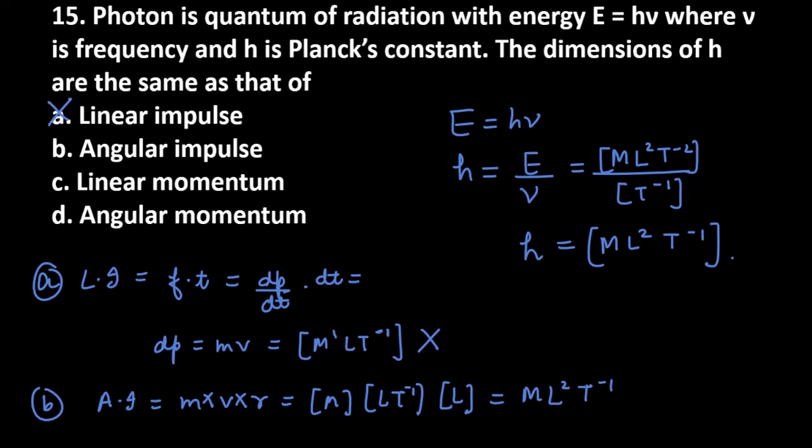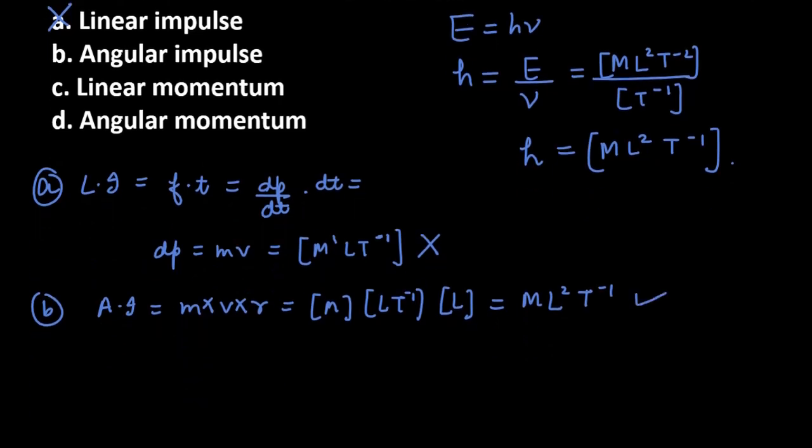Now check option c, linear momentum. What is linear momentum? It is mv, so you can write MLT⁻¹. This doesn't match h, so we're not selecting c. Now last is angular momentum.